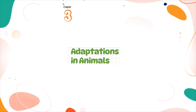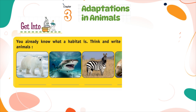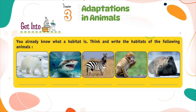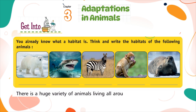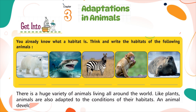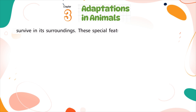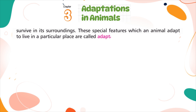Chapter 3: Adaptations in Animals. You already know what a habitat is. There is a huge variety of animals living all around the world. Like plants, animals are also adapted to the conditions of their habitats. An animal develops a particular type of body, behavior, and habits to adjust and survive in its surroundings. These special features, which an animal adapts to live in a particular place, are called adaptations.